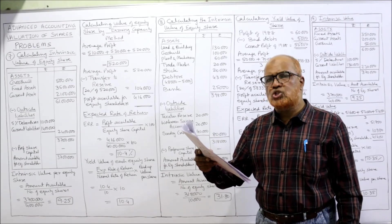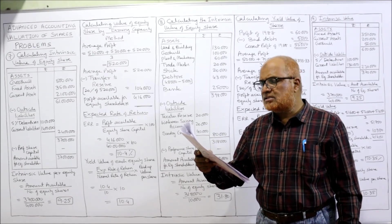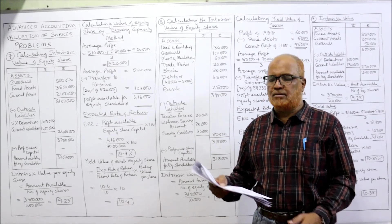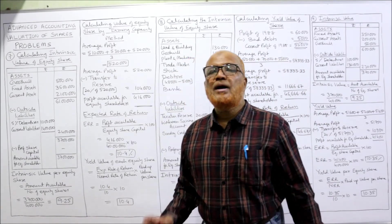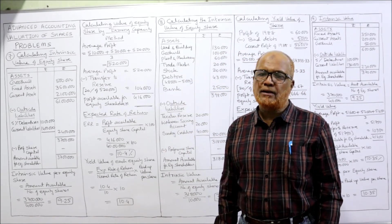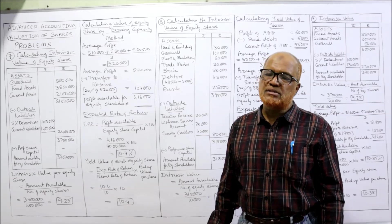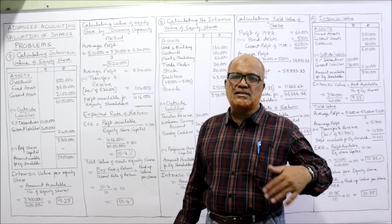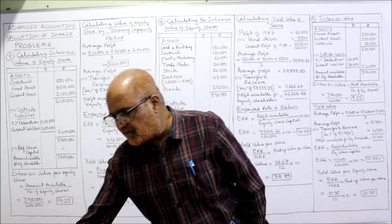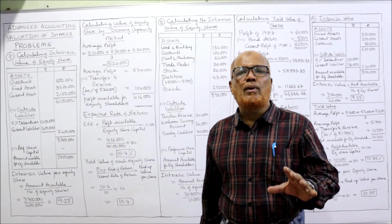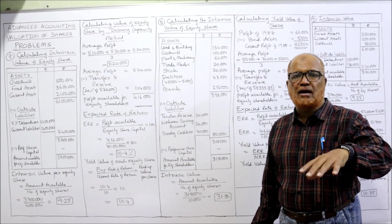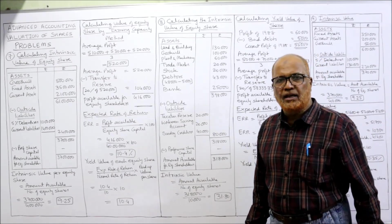And the fair investment return may be taken at 10% — that is the normal rate of return (NRR). Compute the value of the company's shares by net assets method and earning capacity method. Earning capacity method is nothing but yield method. Sometimes they call it earning capacity, sometimes yield method — same thing. In a single problem, we are going to solve by intrinsic and also by yield.